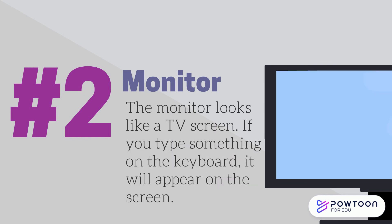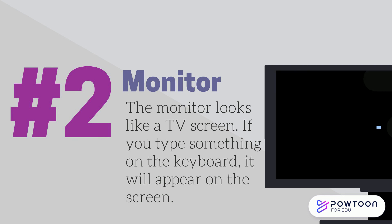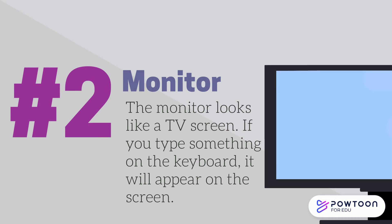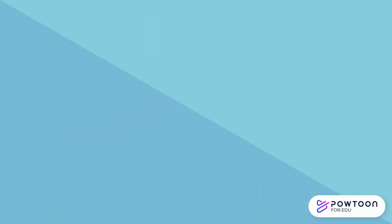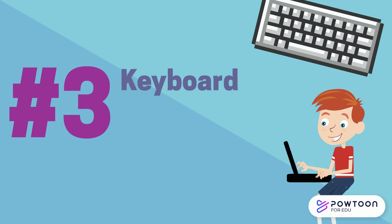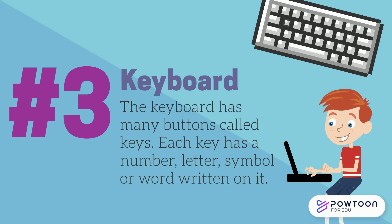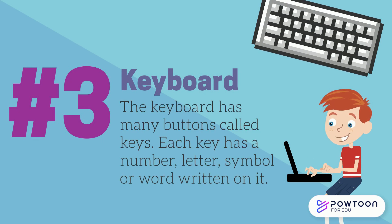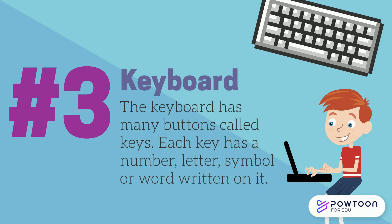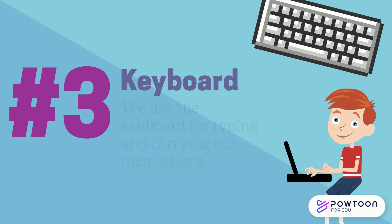Number two: the monitor. A computer monitor is an electronic device that shows photos, movies, and games. The monitor looks like a TV screen. If you type something on the keyboard, it will appear on the screen. Number three is the keyboard.